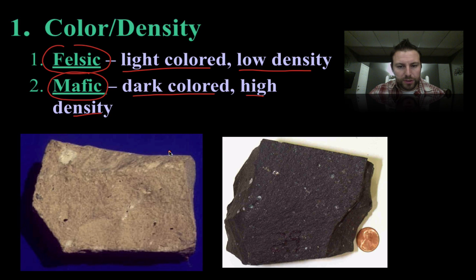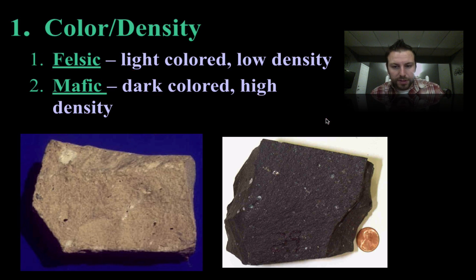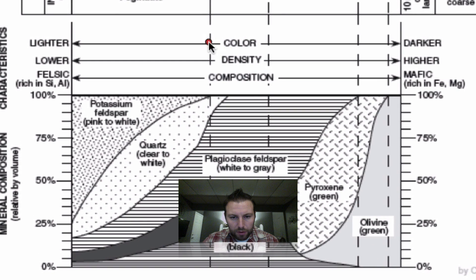We have two different samples right here — lighter color felsic, darker color mafic. You'll see what these terms mean when we take a look at the reference table. We go to our reference table and look at the middle of the chart where we see our color, density, and composition.